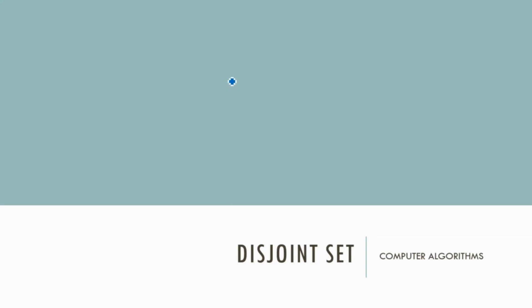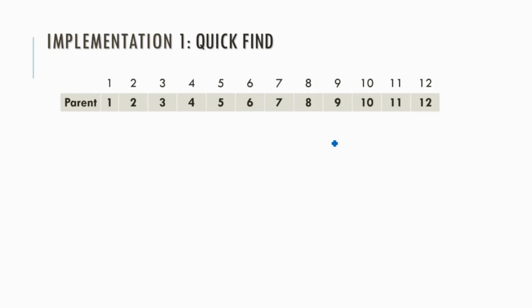Hello everyone, today we will discuss the disjoint set data structure. We consider an array-based implementation where the parent is an array, and every cell contains the representative of the set for the corresponding element. Initially, every set consists of only one element, so the representative of set 1 is 1, the representative of set 2 is 2, and similarly the representative of set 12 is 12.